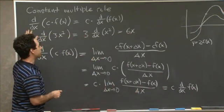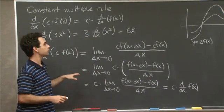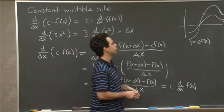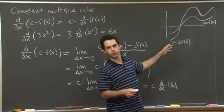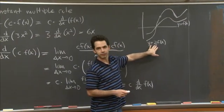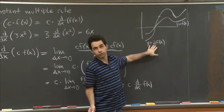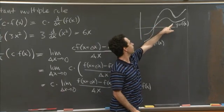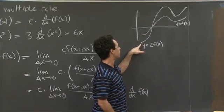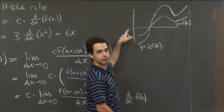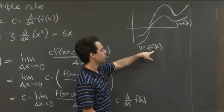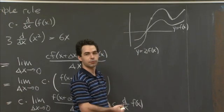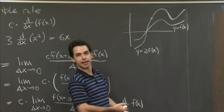So we've now proved the constant multiple rule. Let me talk a little bit about some geometric intuition for why this works. So let's take c equals 2, just for simplicity. Here I have a graph, y equals f of x, and I have also drawn the graph y equals 2 f of x. So the relationship between these graphs is that y equals 2 f of x is what you get when you stretch the graph for y equals f of x vertically by a factor of 2.